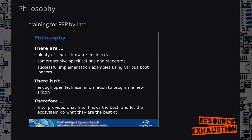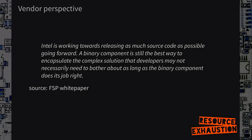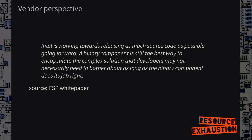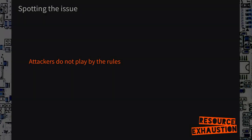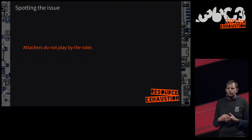This is from an official Intel training slide given at certain events. They tell people: we have lots of firmware developers and we want to support them, but not too much. Here's the vendor's perspective from Intel's FSP white paper — FSP is the Firmware Support Package. They're working towards releasing something, but not really. If you have a binary and it works as desired, then it's okay — otherwise, well, they promise it works. And the same applies for ME. This is where Dexter's law applies, saying that only proprietary software vendors actually want proprietary software. And the issue is: if somebody is attacking your system, they do not play by the rules.